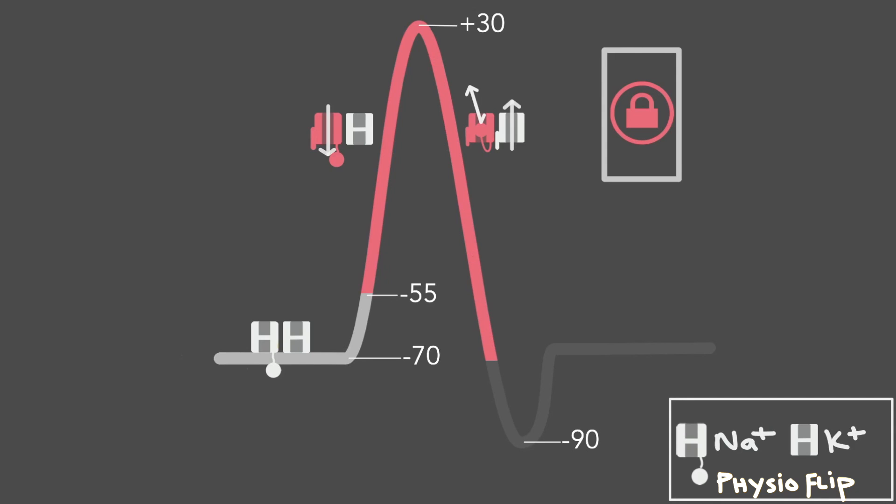And in fact, this entire region that I highlighted in red, from minus 55 back to around minus 70, is known as the absolute refractory period. The word refractory sounds like a fancy word, but I like to think of it as another way to say the word resistant. So if a part of the neuron is in the absolute refractory period, this part of the neuron is absolutely resistant to starting another action potential no matter what.